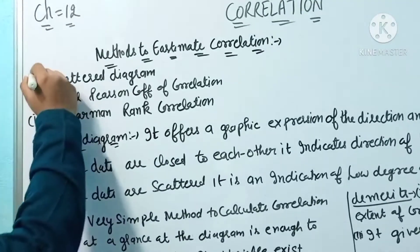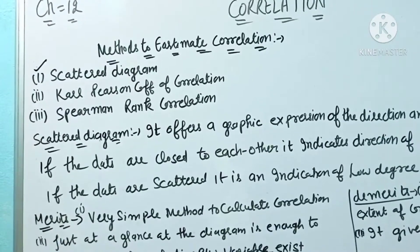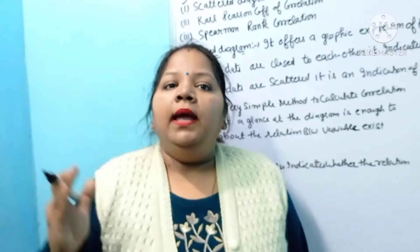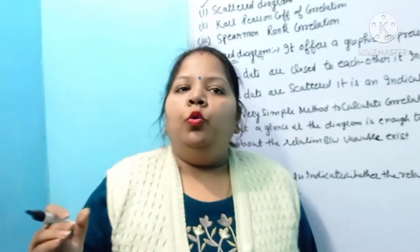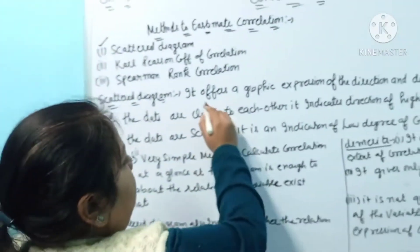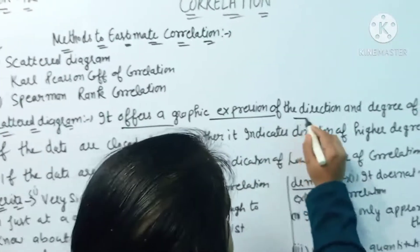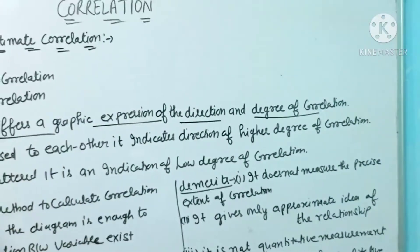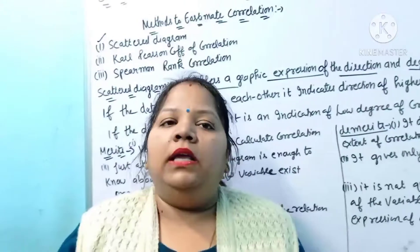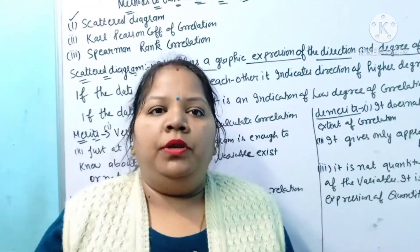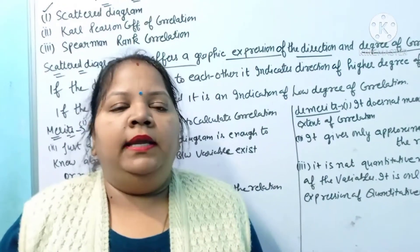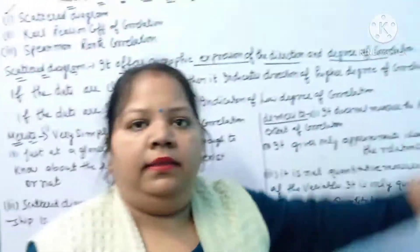In this video we will discuss only scatter diagram. Scatter diagram is a graphic presentation which tells us what direction our variable is. The graphic expression shows the direction and the degree of correlation. The scatter diagram tells us whether the direction of our correlation is positive or negative.